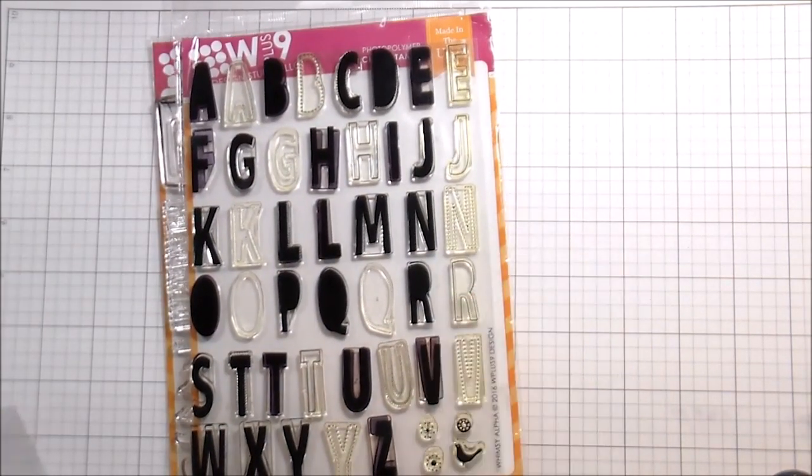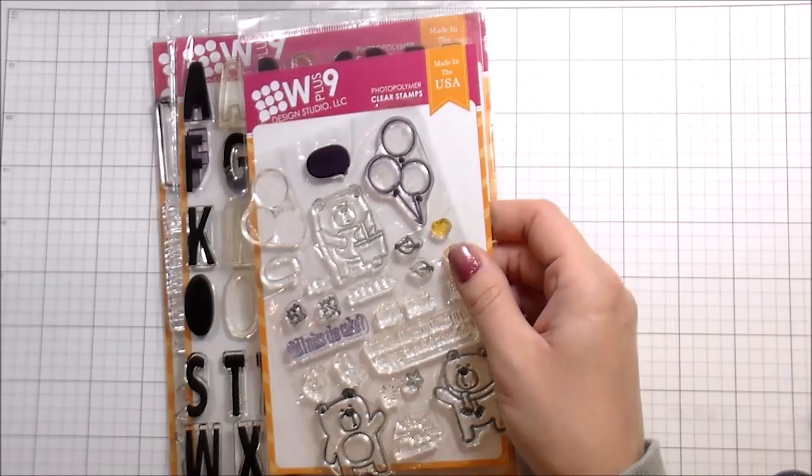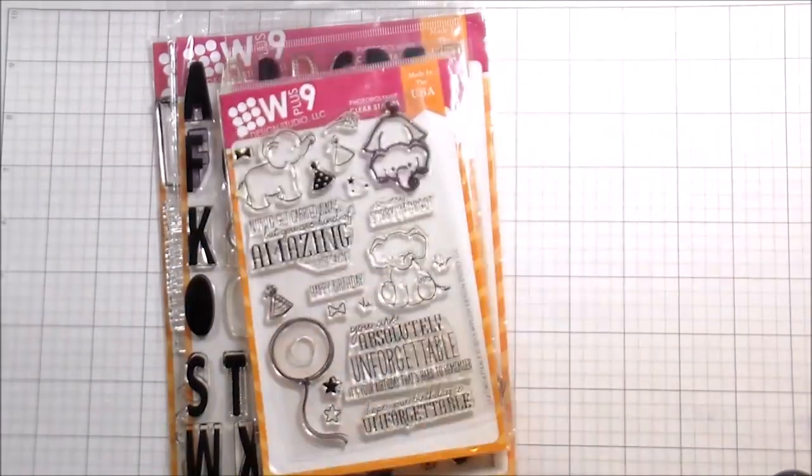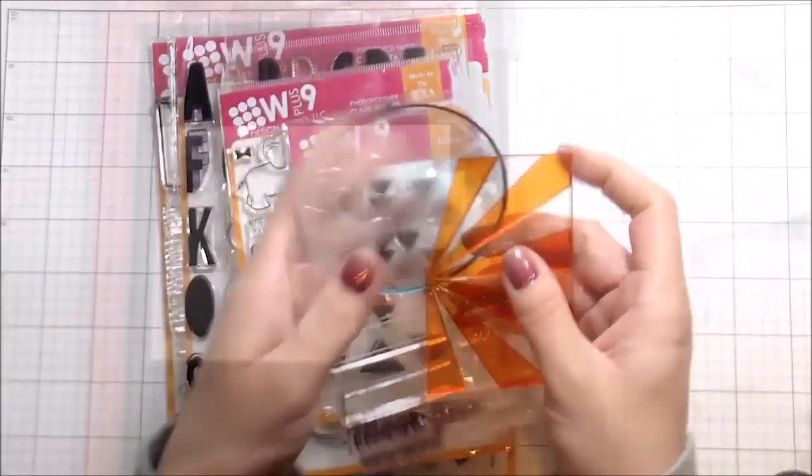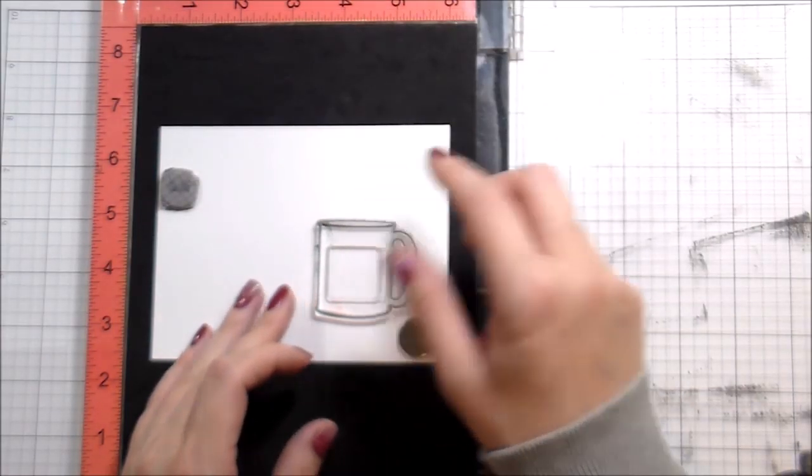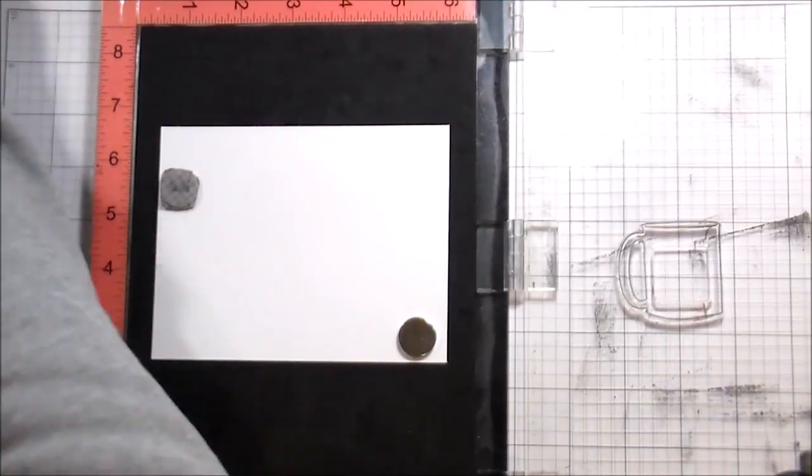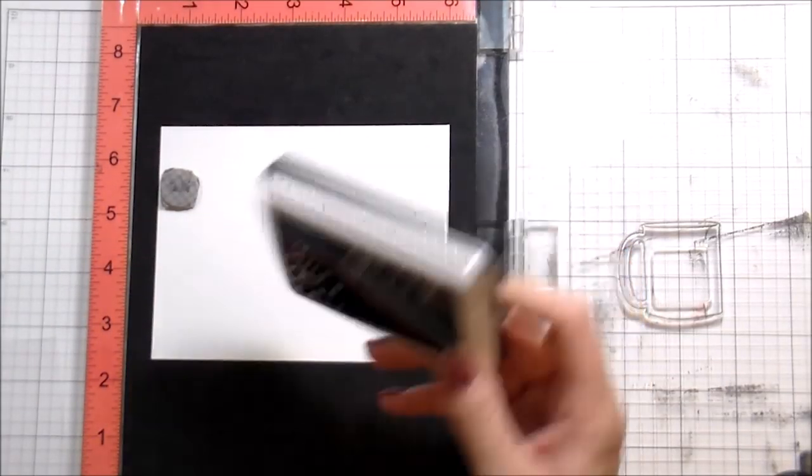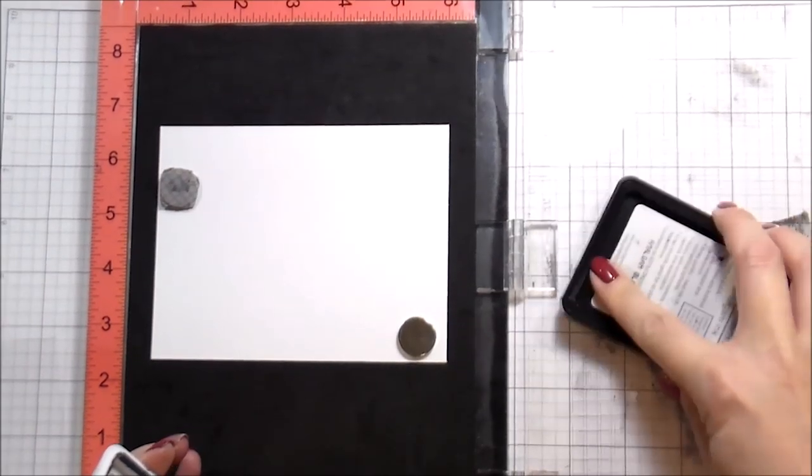I'm using a lot of stamp sets here - the Cookies and Cocoa, the Whimsy Alpha, Friends for All Seasons Fall, Unforgettable, and the Big Top Background and Basic Labels. Those triangles are from the Master Triangles, which isn't available anymore, so I apologize.